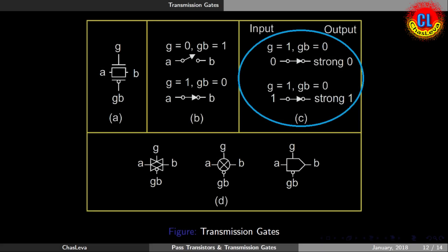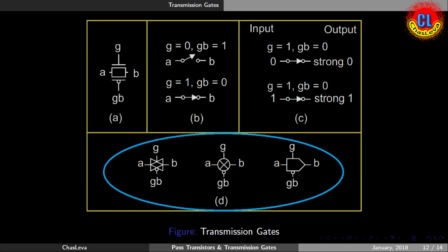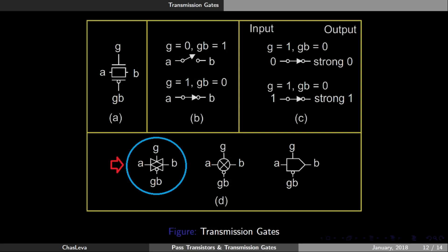If source voltage is zero, the NMOS transistor portion will pass strong zero. If source voltage is one, then PMOS transistor portion will pass strong one. The below are the other notations of transmission gate. Among these notations, the one circled in blue is the commonly used one in circuits.